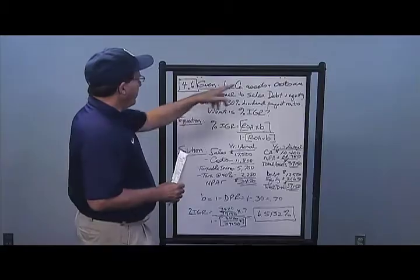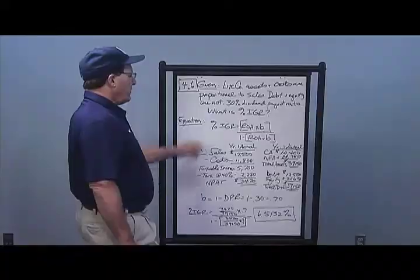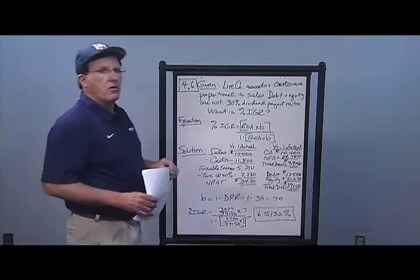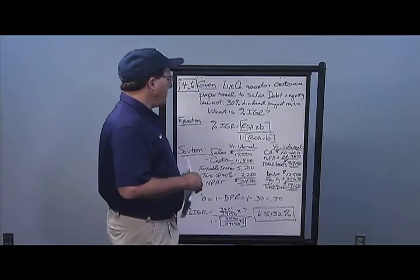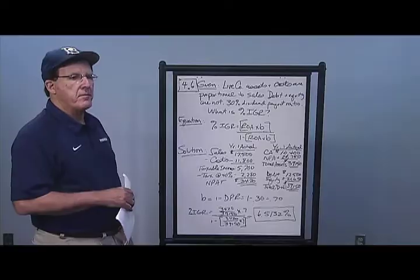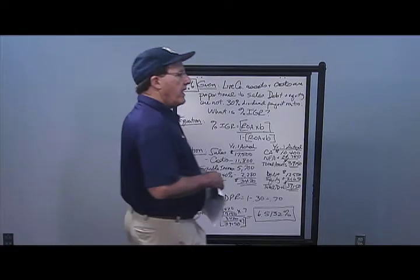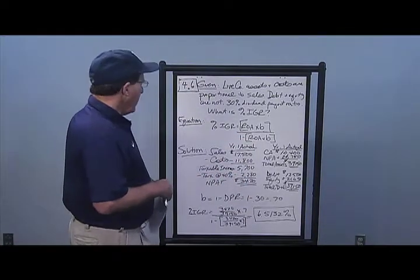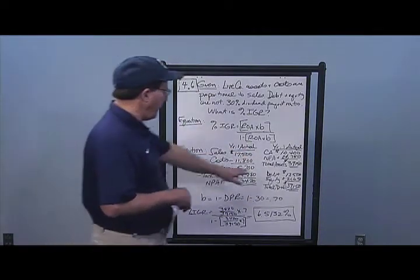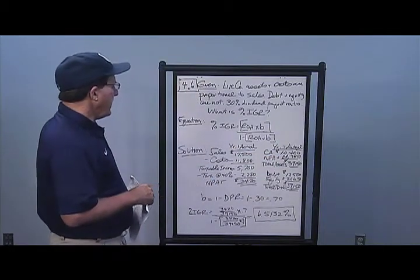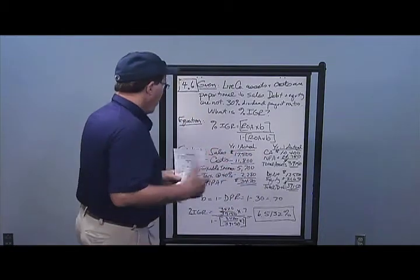In problem number six, Life Company has assets and costs proportional to sales; debt and equity are not. There's a 30% dividend payout ratio. What is their internal growth rate (IGR)? IGR equals ROA times b, divided by one minus the quantity ROA times b. Watch your brackets — make sure they're in the right place and do the mathematics inside the brackets first. I use year one actual given figures.